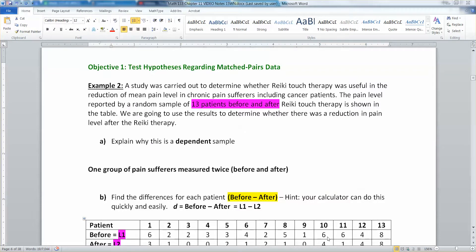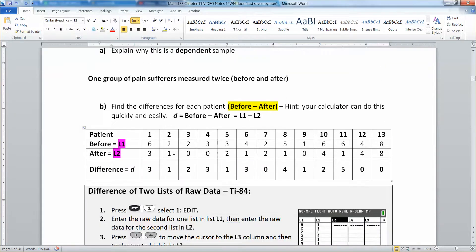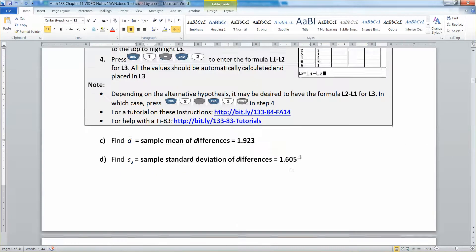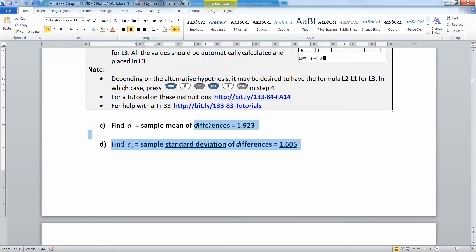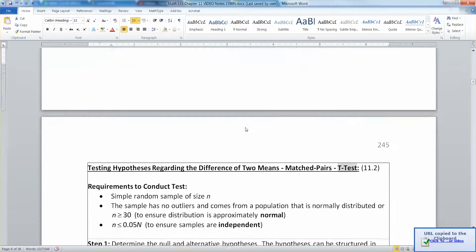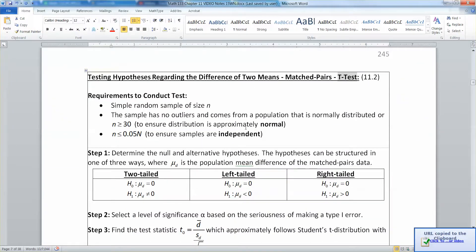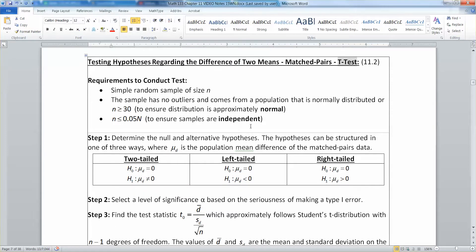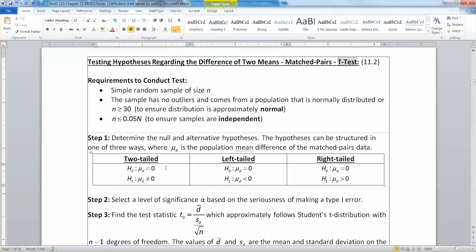We're continuing with our example. We've already found this is a dependent sample, found the differences using our calculator, and found basic statistics about those differences, namely the sample mean and sample standard deviation. Now we want to conduct a hypothesis test for the difference between two means for matched pairs data.